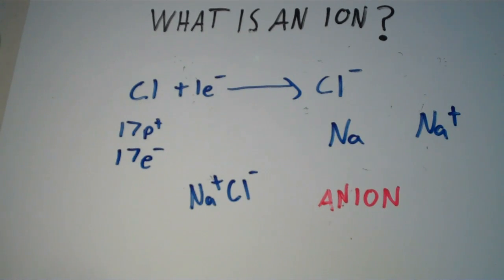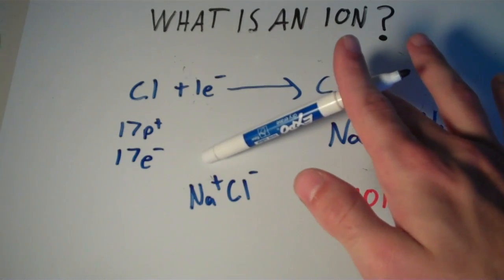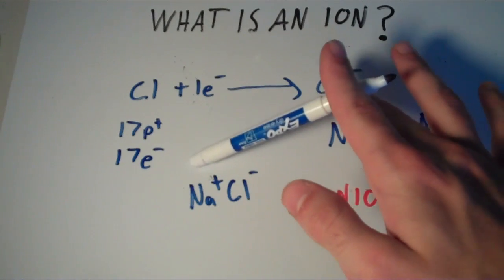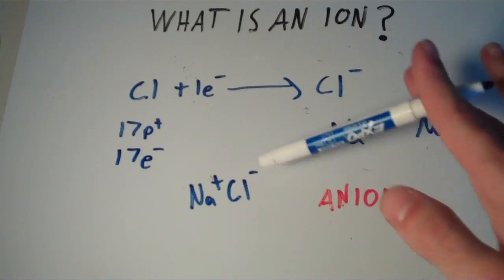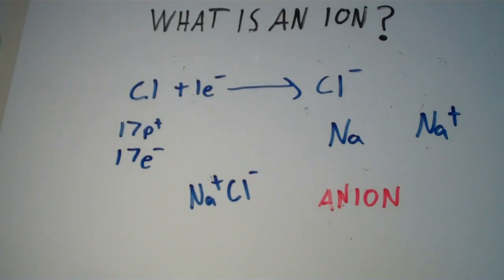And in ordinary matter, positively charged cations almost always occur next to negatively charged anions so that the overall charge is neutral.